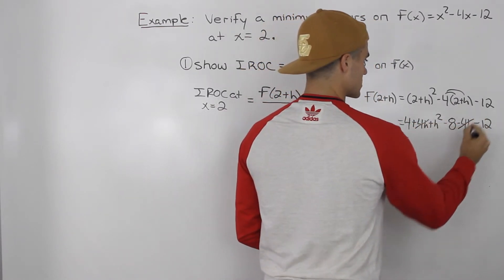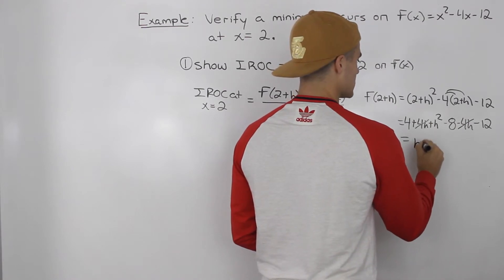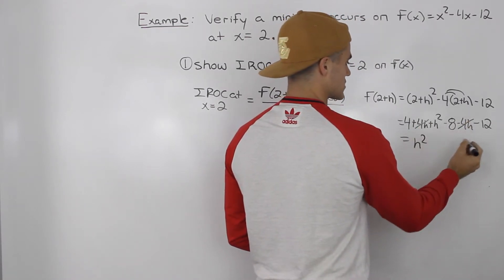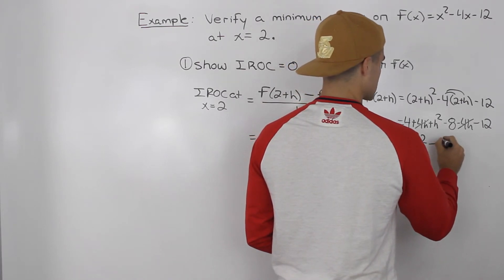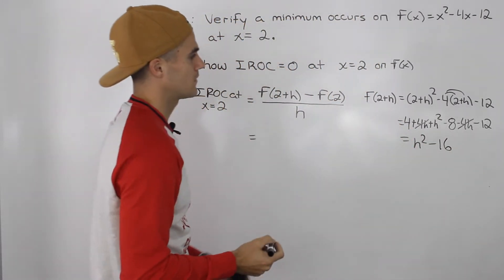Notice how the 4h's cancel out. So you're left with h² and then 4 - 8 - 12 would give you minus 16.